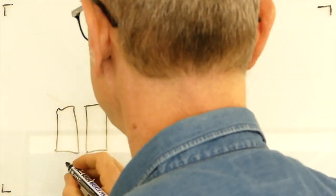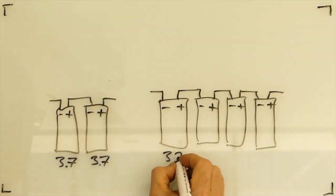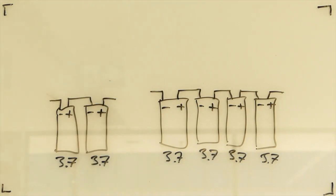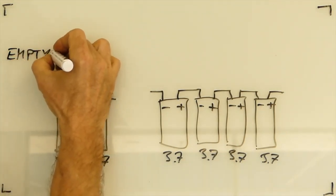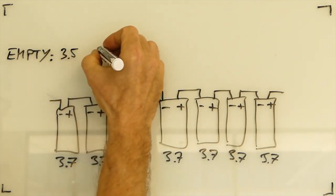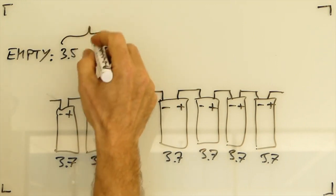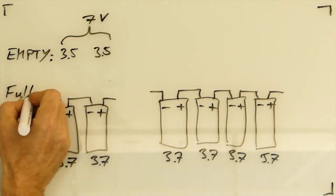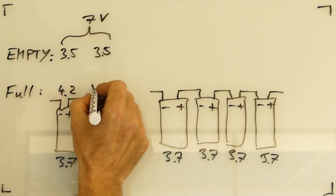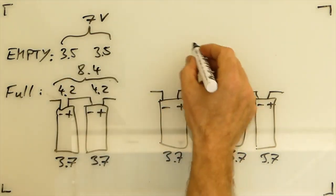Now to recap, we have two cell batteries and four cell batteries. They have a nominal voltage of 3.7 volts per cell, but the more interesting values are actually the empty and full voltages. The two cell batteries are considered empty when they are at 3.5 volts per cell, making it 7 volts for the pack. And they are considered full when the cells sit at 4.2, making that 8.4 volts for the pack.